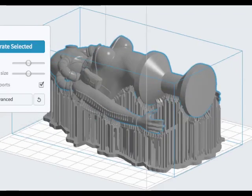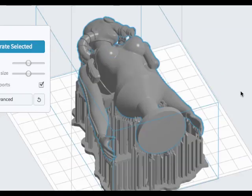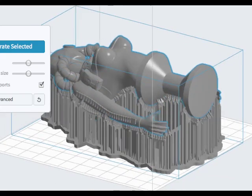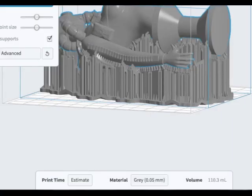So once that's done, you're kind of good to go. It says the volume is about 110 milliliters. That's quite a bit for the printer. I think the capacity is 120, so I'm right at the edge.